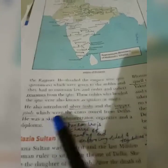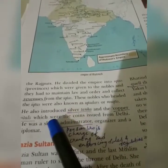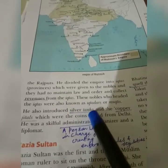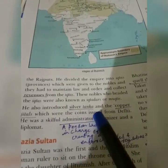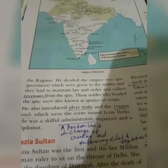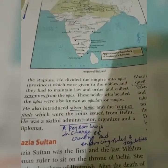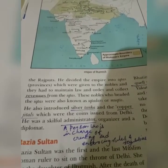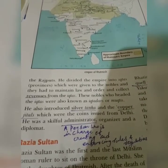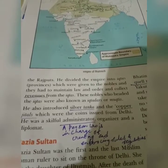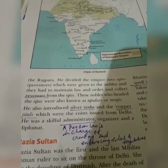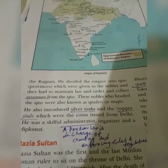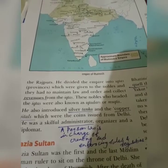Iltutmish introduced two coins: the silver tanka, which had an inscription in Sanskrit and a picture of a bull or Shivalinga, and the copper jital, which was used for daily purposes in Afghanistan and Northwest India. Both the silver tanka and copper jital were issued from Delhi.